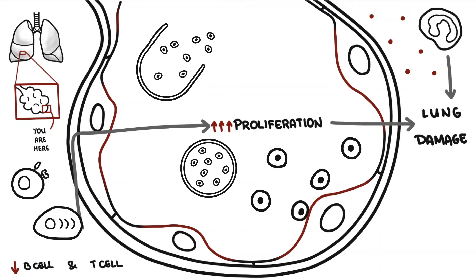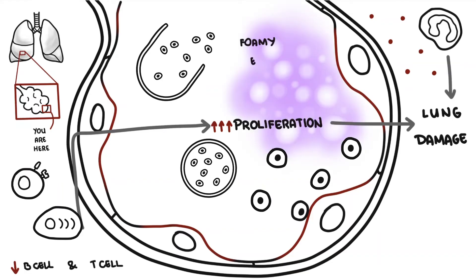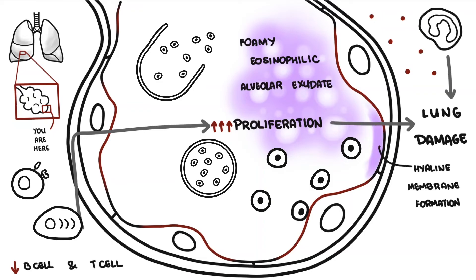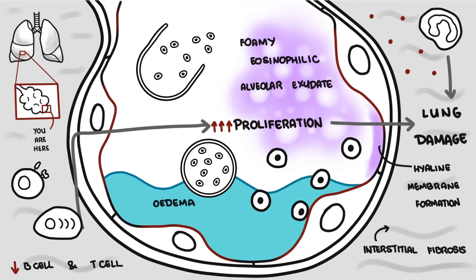The principal histological finding in patients who have Pneumocystis pneumonia is a foamy eosinophilic alveolar exudate. There may also be hyaline membrane formation, interstitial fibrosis, and underlying edema.